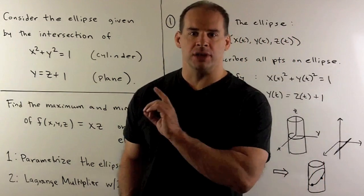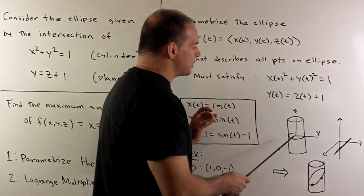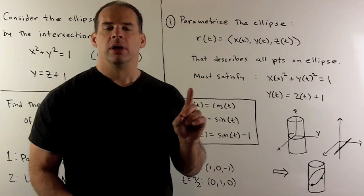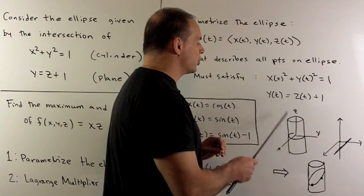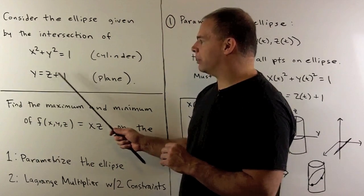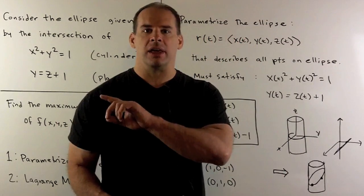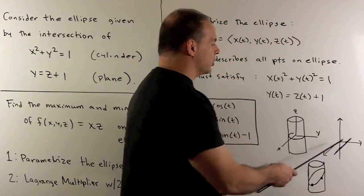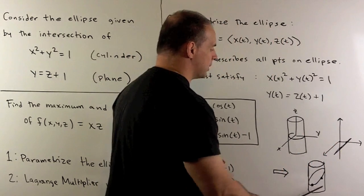Now, if we want to parametrize this ellipse, first we should draw a picture. We're in 3-space here. I have x-axis, y-axis, z-axis. We have the cylinder x squared plus y squared equals 1, so I draw the circle x squared plus y squared equals 1 in the xy-plane, and then z can be anything, so that traces out the cylinder. Then I have the plane y equals z plus 1. I'll sketch this line in the yz-plane, and since x can be anything, we extend it out parallel to the yz-plane. If I take the intersection of this plane with this cylinder, we're going to get an ellipse.